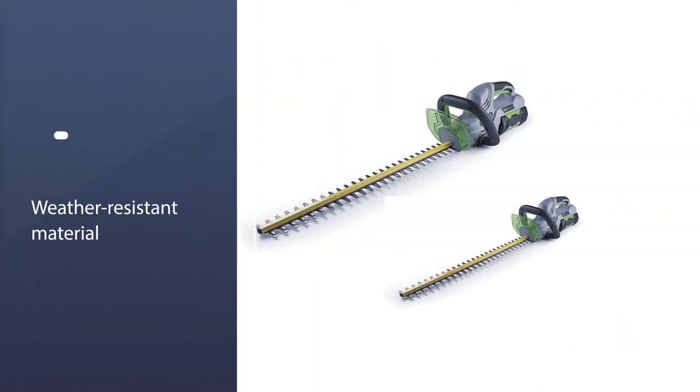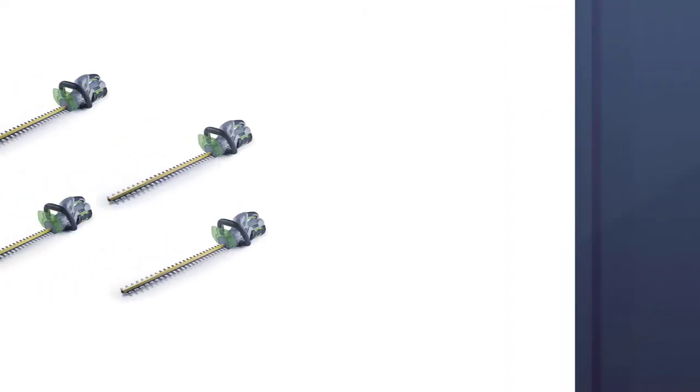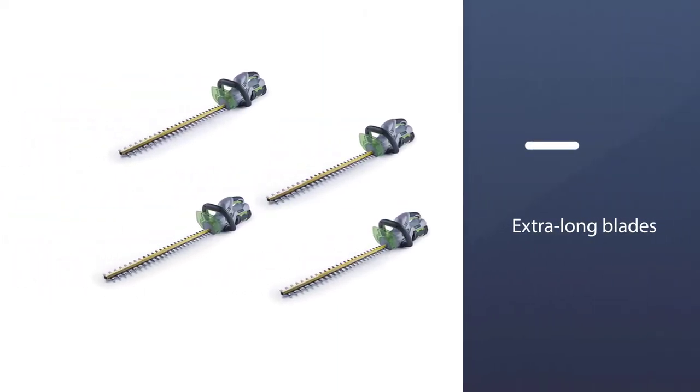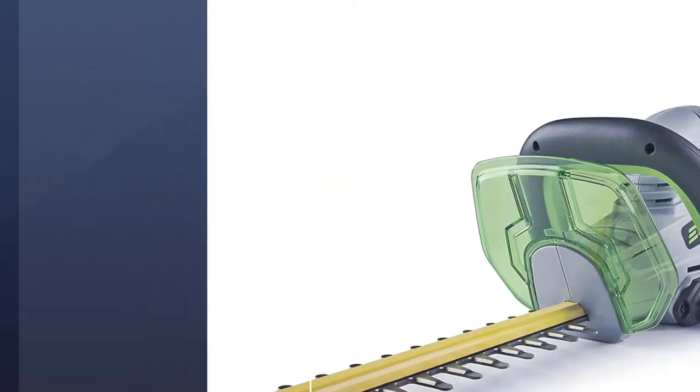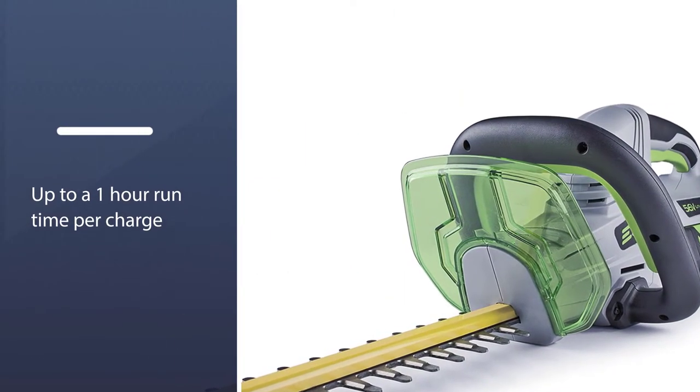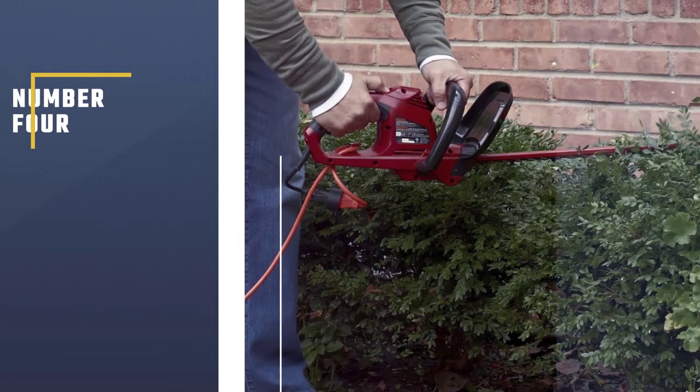Running longer than most of its type, up to a full hour, this 56-volt battery collaborates with 24-inch dual action hardened steel blades to offer clean cuts with less vibration. And while this model doesn't come with a blade cover, it is fashioned from weather-resistant material to protect its entirety from all sorts of conditions.